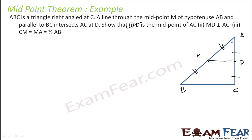Second, we have to prove that MD is perpendicular to AC. Since MD is parallel to BC and angle BCA is 90 degrees, the angle MDC is also 90 degrees, meaning MD is perpendicular to AC.